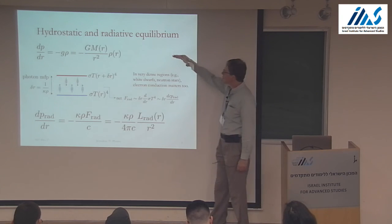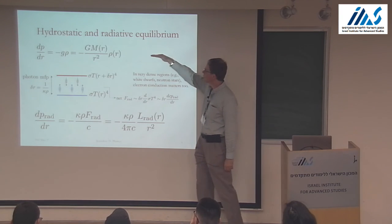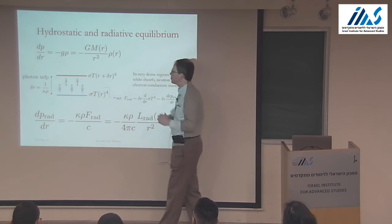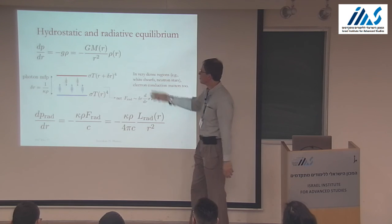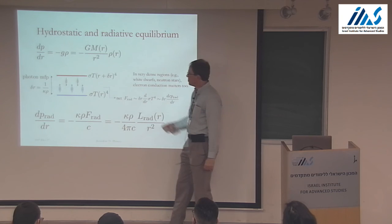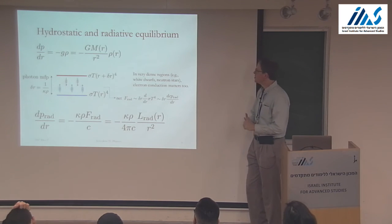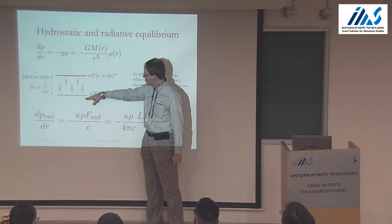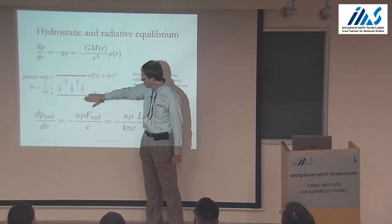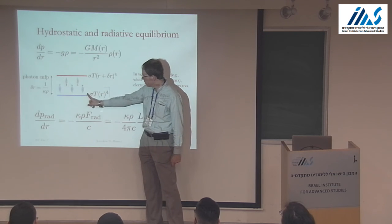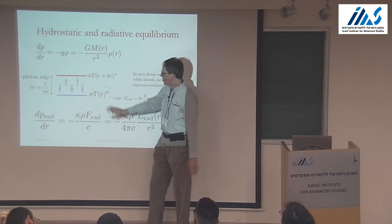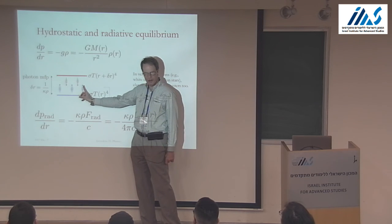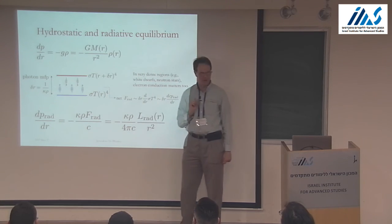Next we get to the hydrostatic equilibrium equation, which just says that the difference in pressure between the top and bottom of a layer is the weight of the layer inside it. Then there's the more subtle radiative equilibrium equation. Photons will carry heat because the center of the star is hot and the surface is cold. If I consider some little layer with a thickness about equal to the mean free path of a photon, 1 over kappa rho, there's more heat coming up from the bottom — which is hotter — than going down from the top, which is colder.